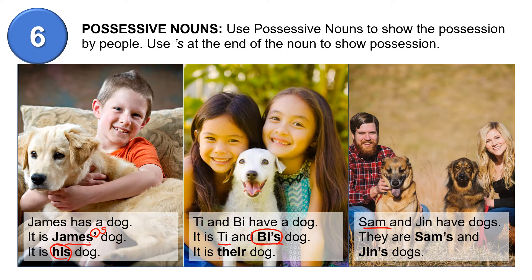Sam has his dog and Jin has her dog. Sam and Jin each have their own dogs, so different ownership. They are Sam's dog and Jin's dog. So they are Sam's and Jin's dogs. When ownership is different, we use apostrophe S for both.